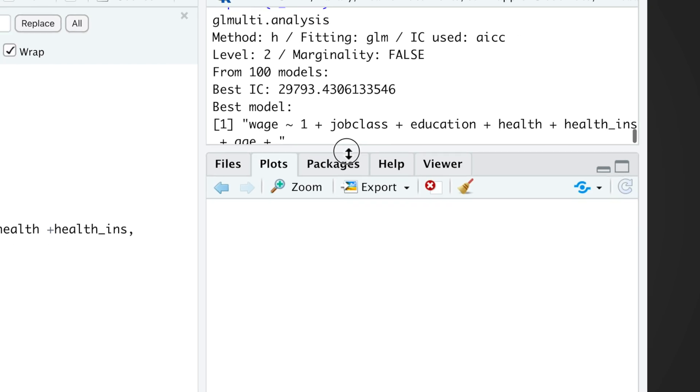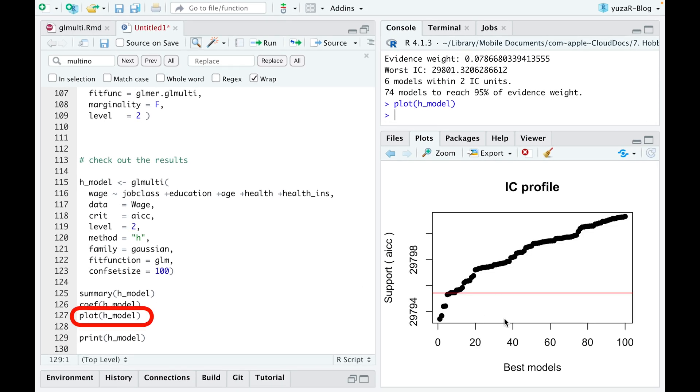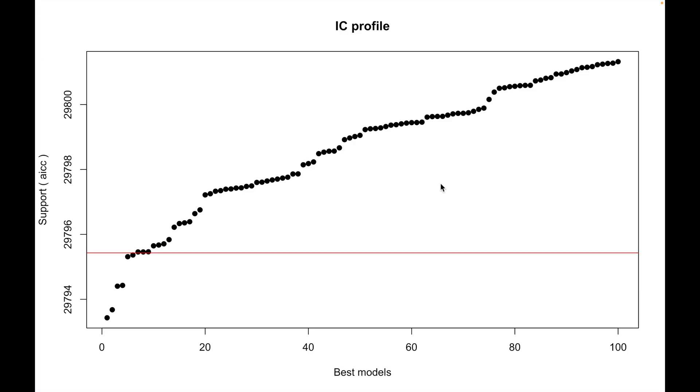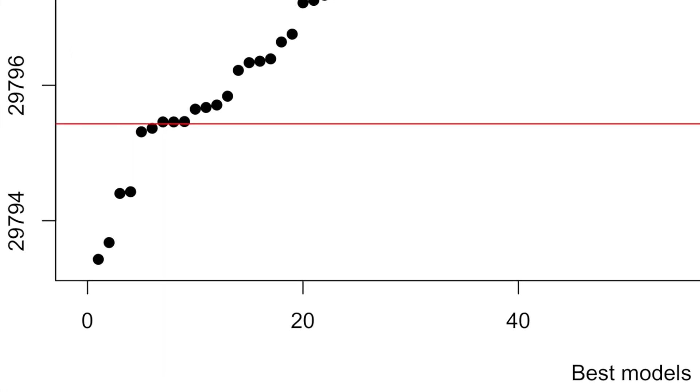There are six models, which we can also see if we plot our object. This plot shows the information criteria values for all 100 models from the confidence set. A horizontal line separates six best models that are less than two information criteria units away from the best model.